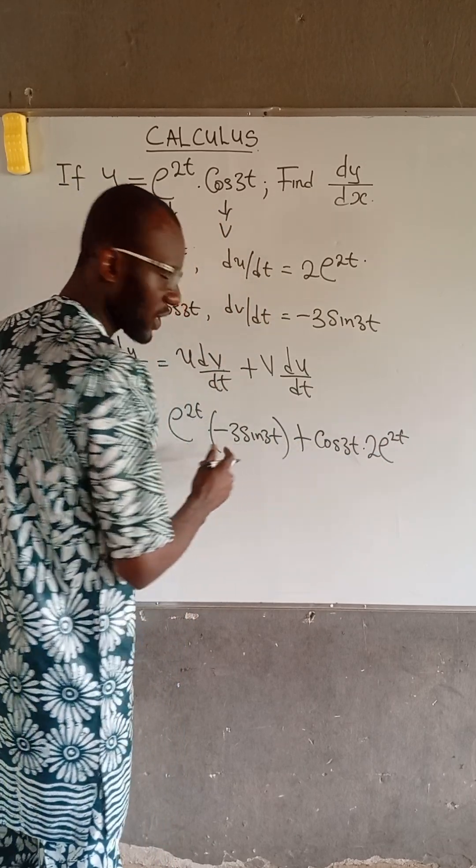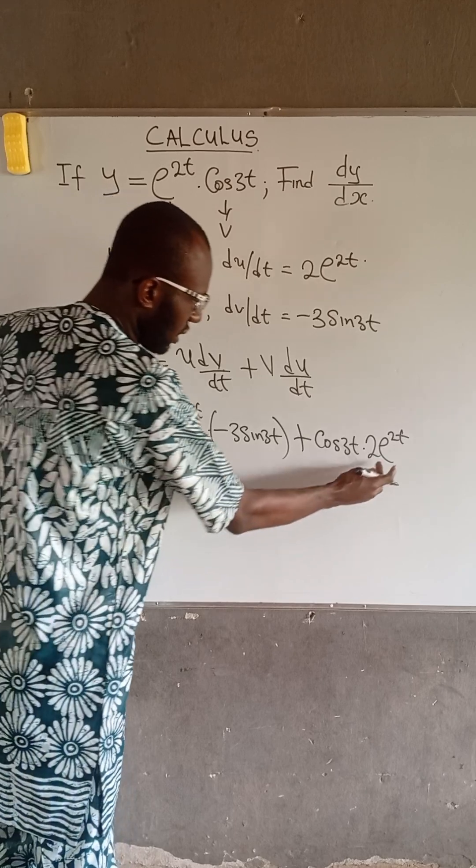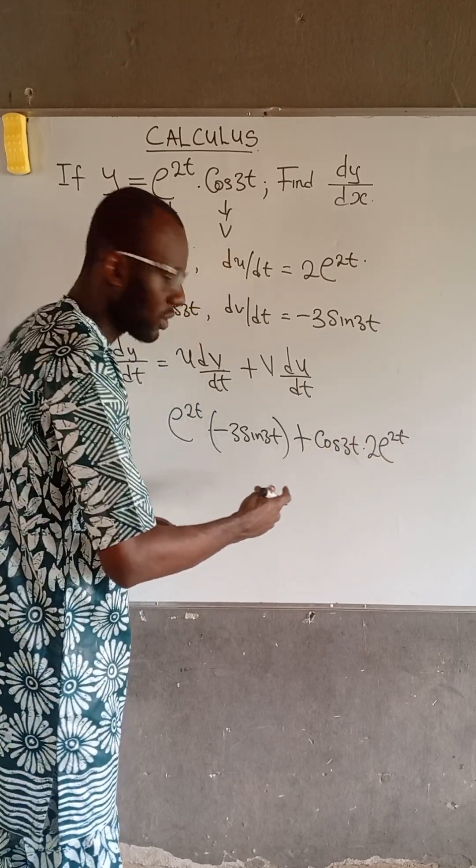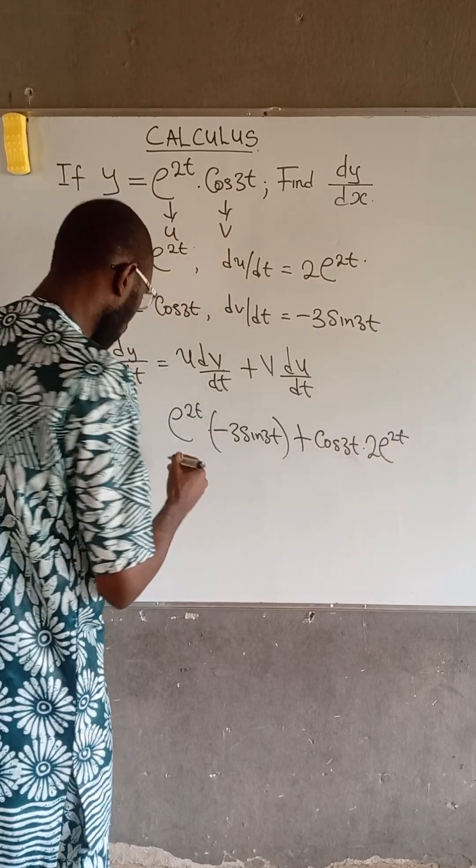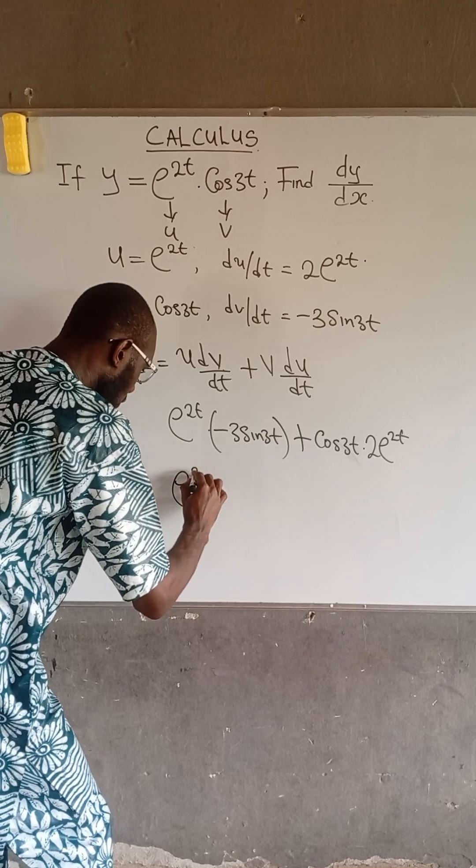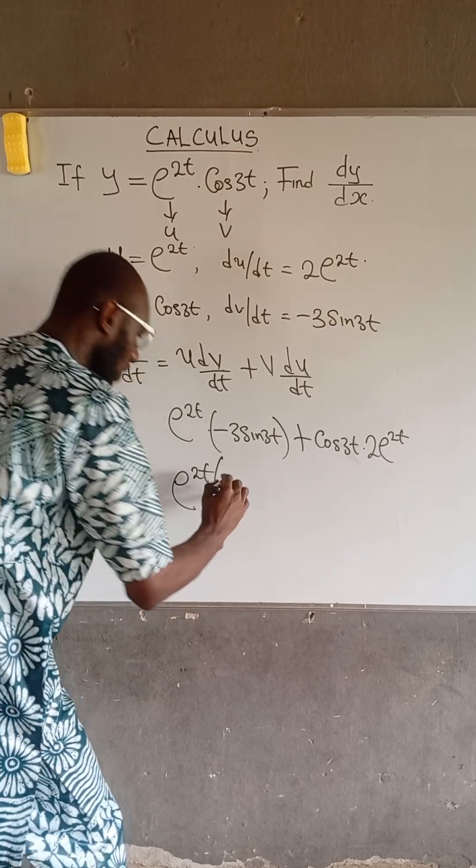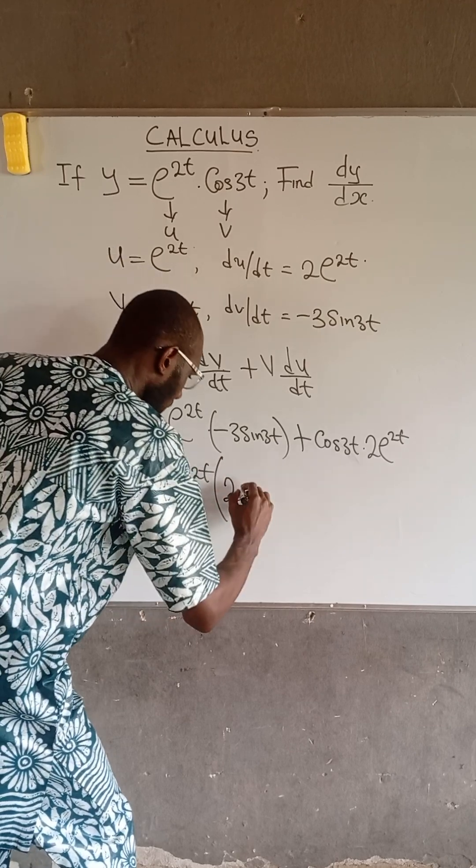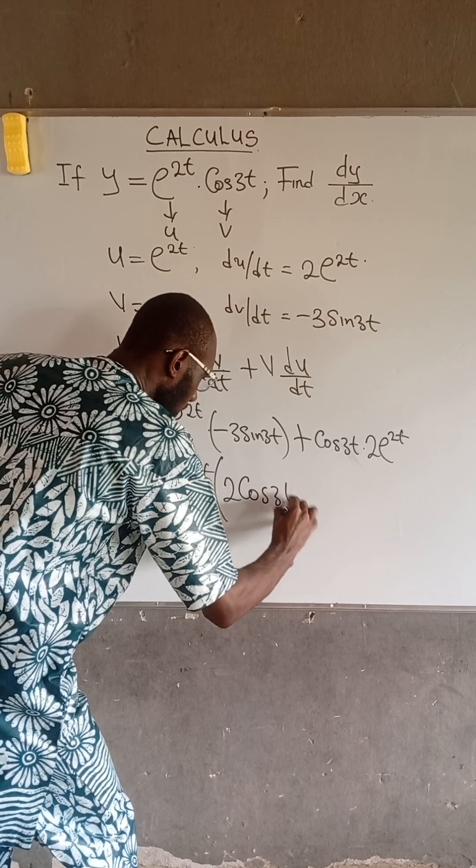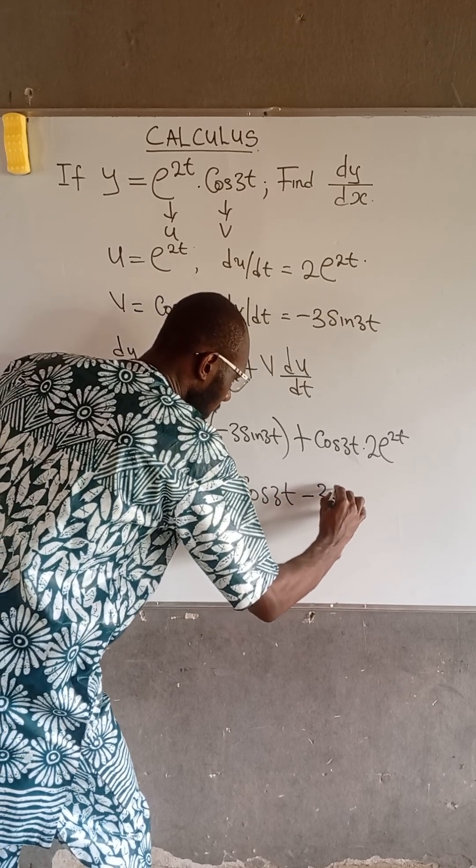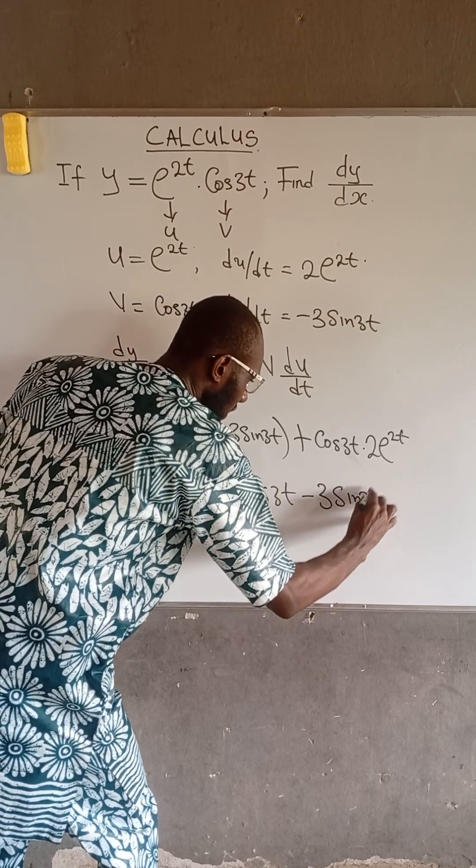Now, if you look at this expression, you will find that e to the power of 2t is common, so we can factor it out. We have e to the power of 2t, open a bracket, this becomes 2 multiplied by cos 3t minus 3 multiplied by sin 3t.